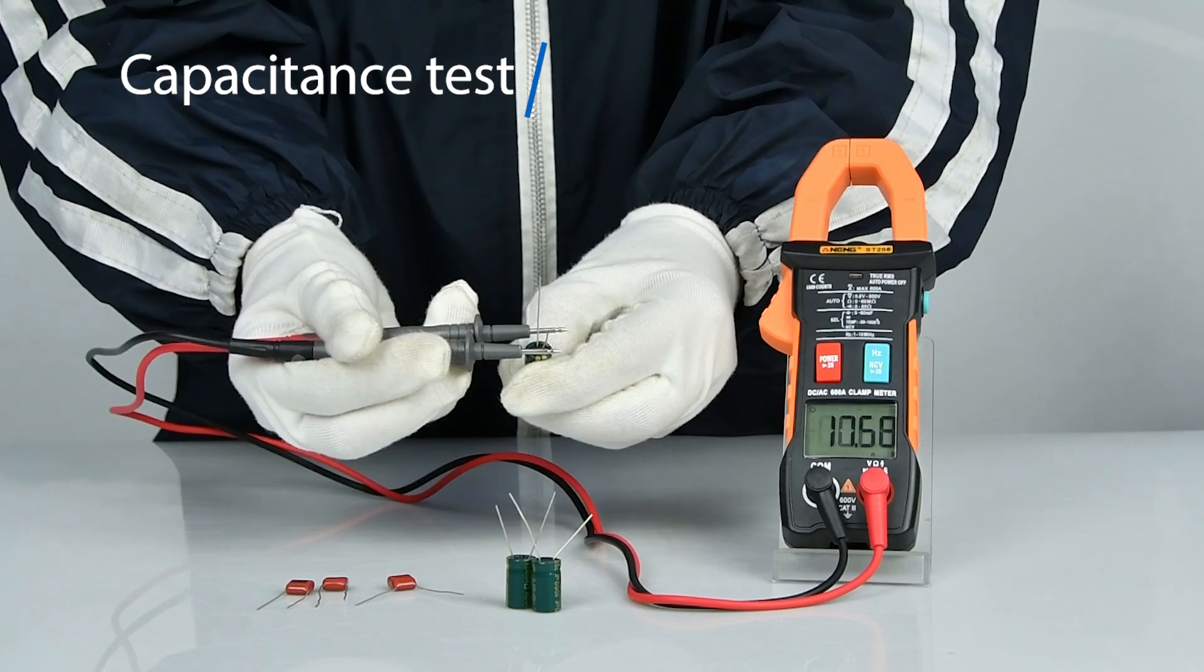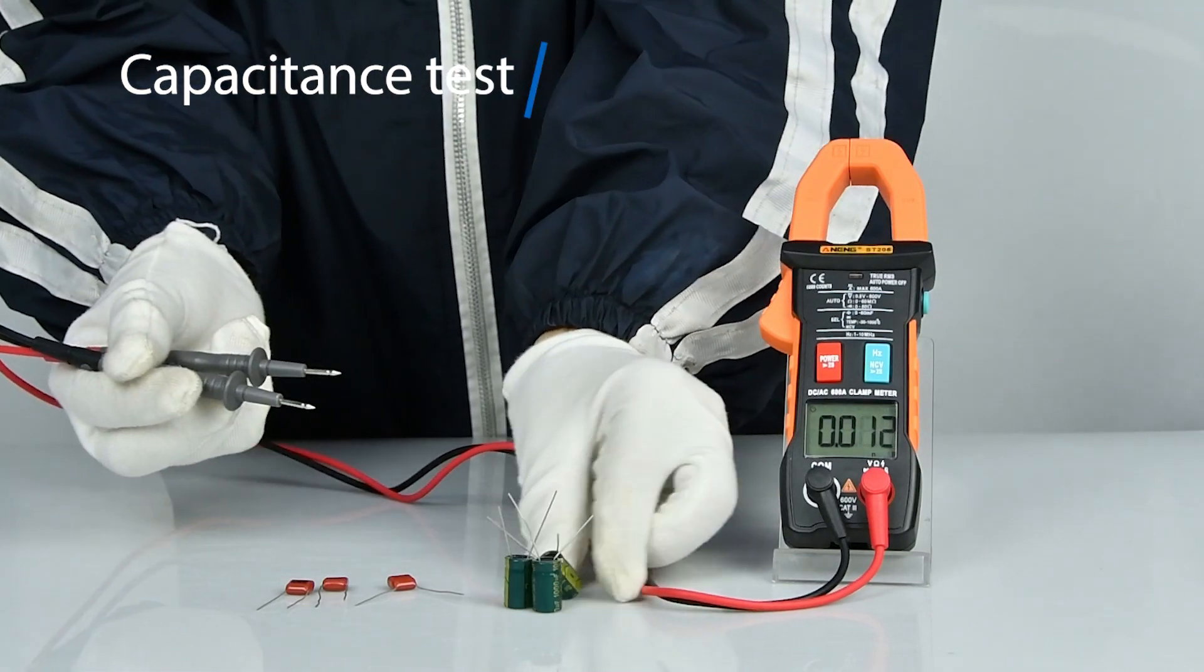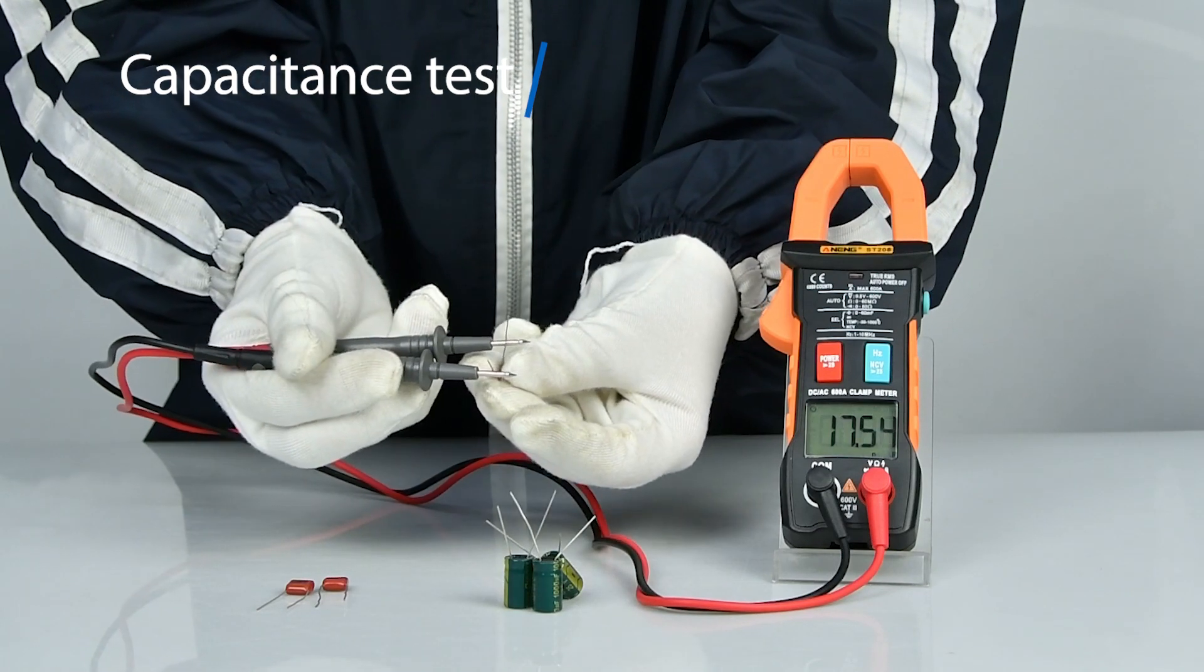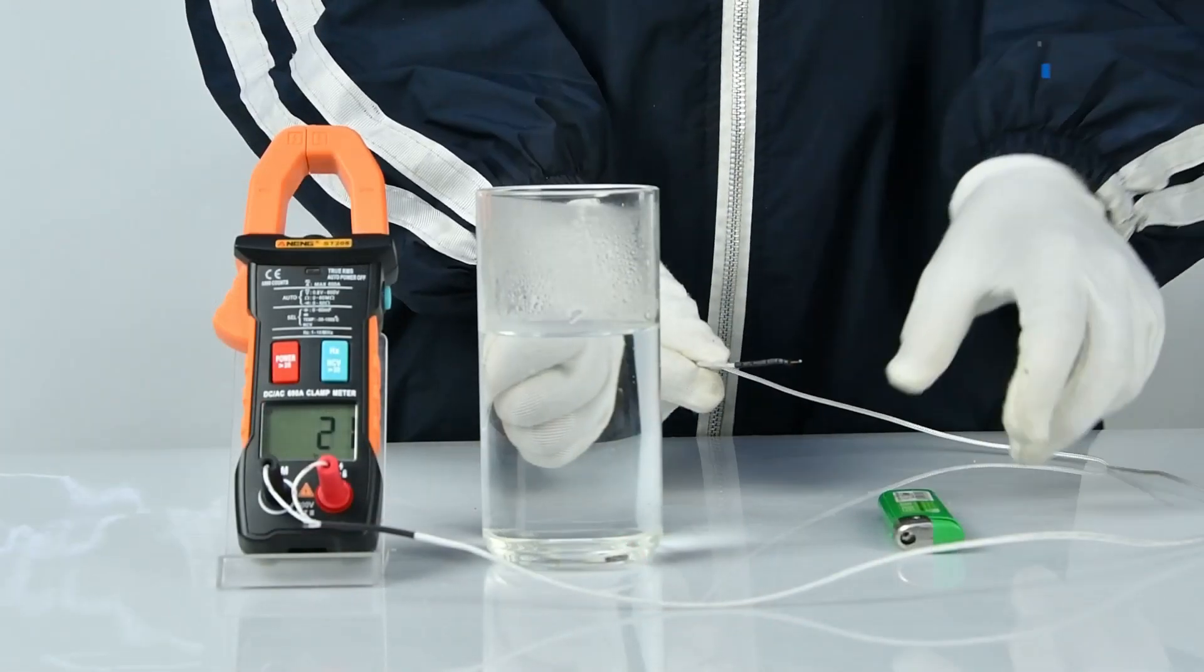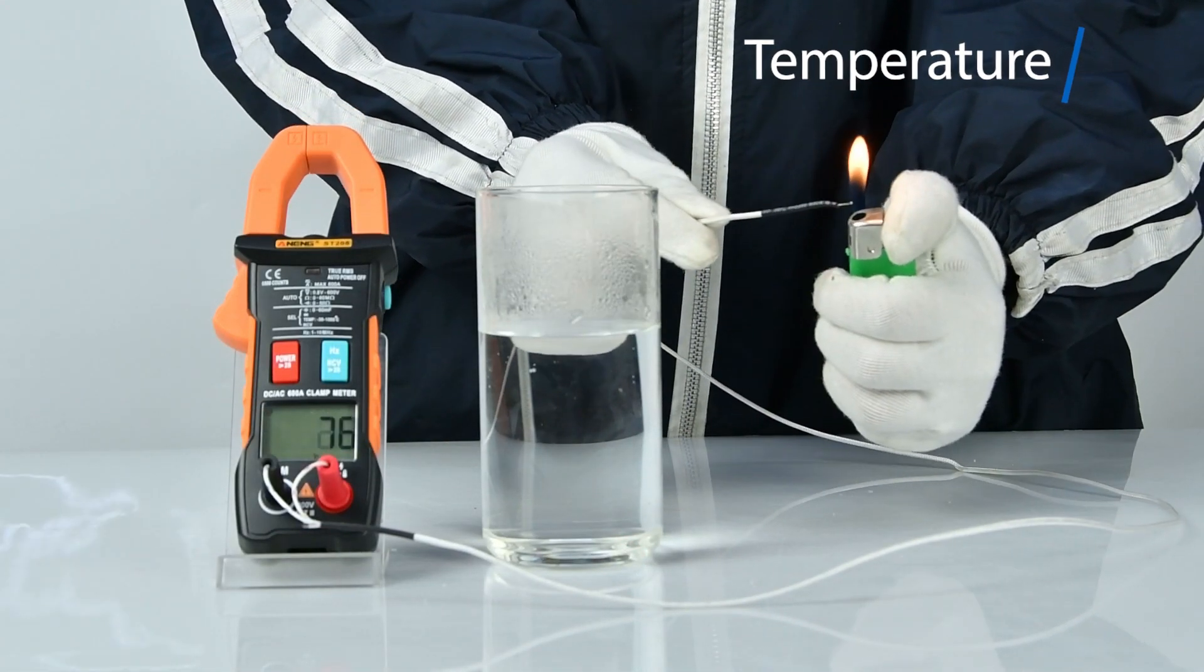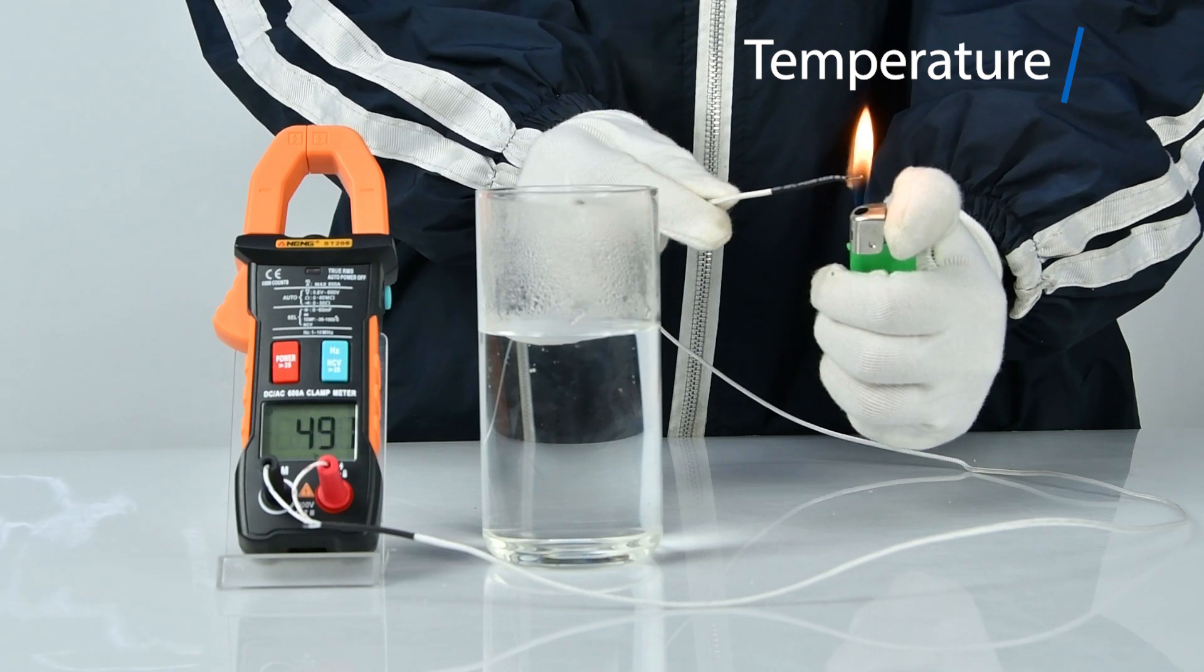Capacitance measurement: discharge capacitor before measurement. Connect the temperature line and measure the temperature by direct contact.